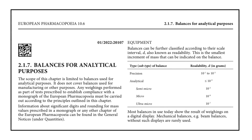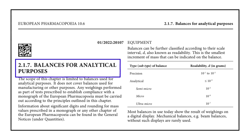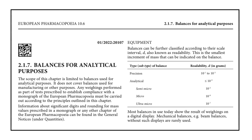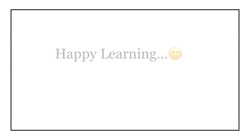So that was all about today's video, where we learned about balance types — the classification of balances as per European Pharmacopoeia chapter 2.1.7. I hope you learned something new today. In upcoming videos we are going to cover types of weight boxes used during balance calibration. Till then, stay tuned to Pharma Pill. Bye bye and happy learning.